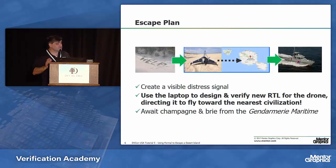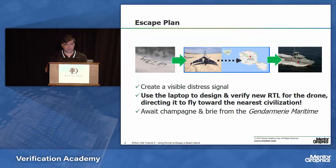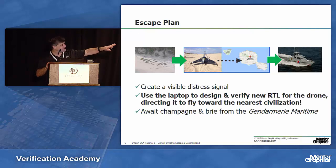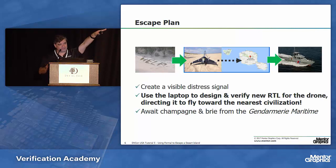So here's the escape plan. First, you create a visible distress signal — planes flying over are certainly looking for you. But the real key to success, to not spend five years on this island like Tom Hanks did, is to use the laptop to design and verify RTL for the drone, and direct it to fly towards the nearest civilization — let's say you're within range of French Polynesia. Before you know it, the drone flies over, sends its message, and the gendarmes are showing up with brie and champagne, and you're saved.